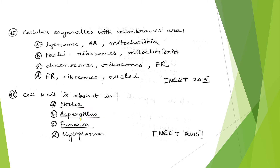The next question: cellular organelles with membranes are lysosome, Golgi apparatus, and mitochondria. In the other options, you can find ribosome included, and we have already discussed that ribosomes don't have any kind of membrane. So the correct answer is option A — lysosome, Golgi apparatus, and mitochondria.